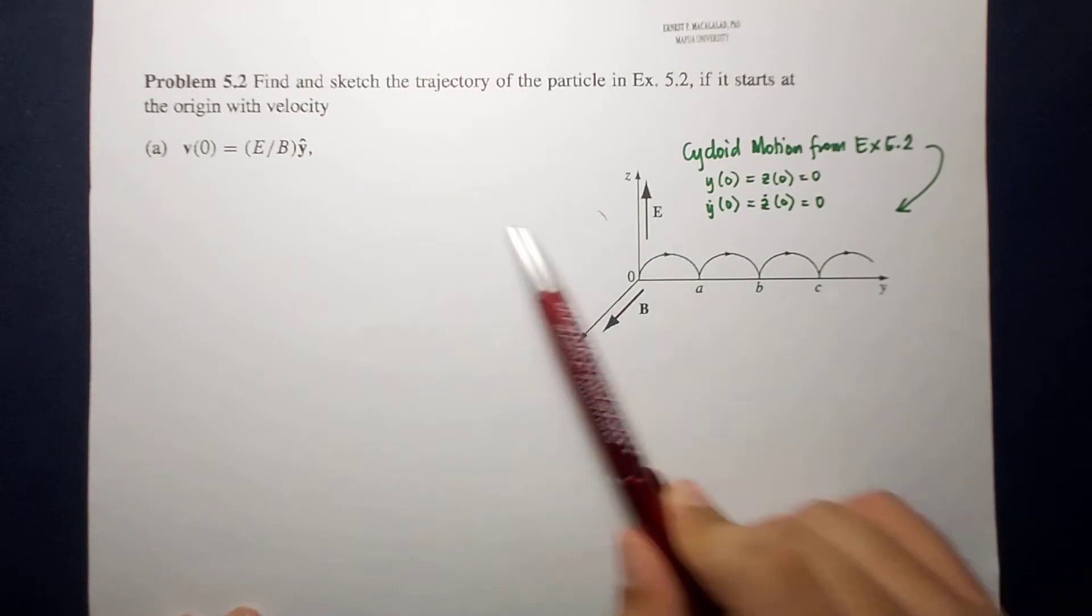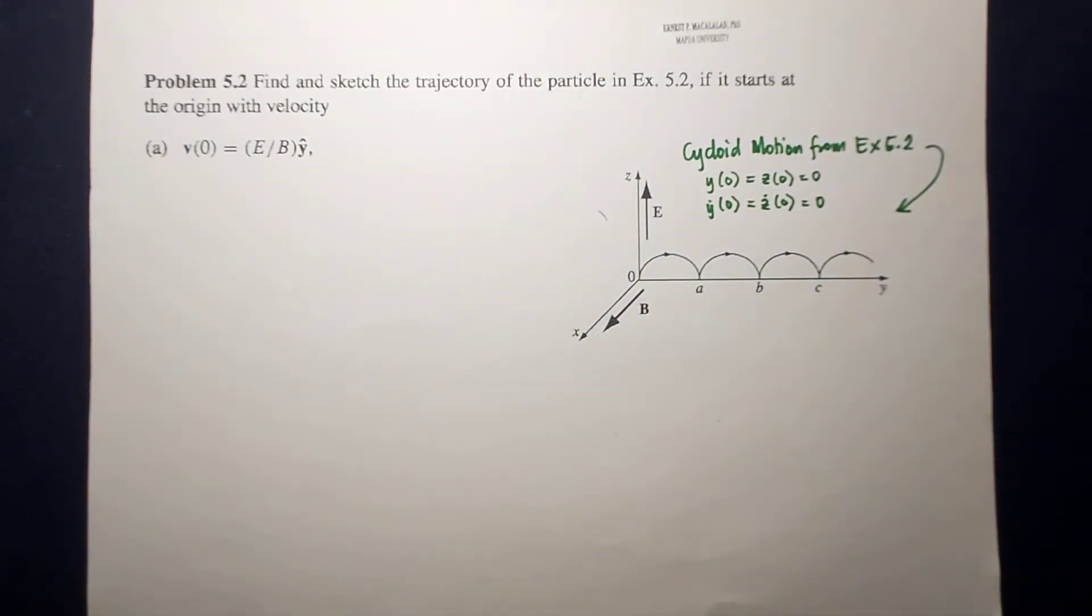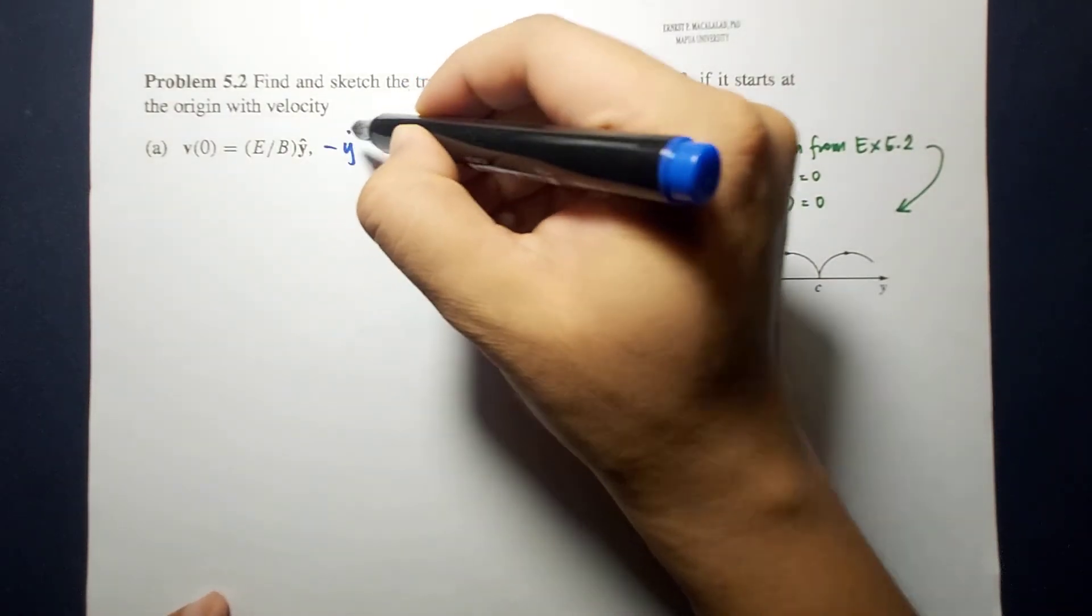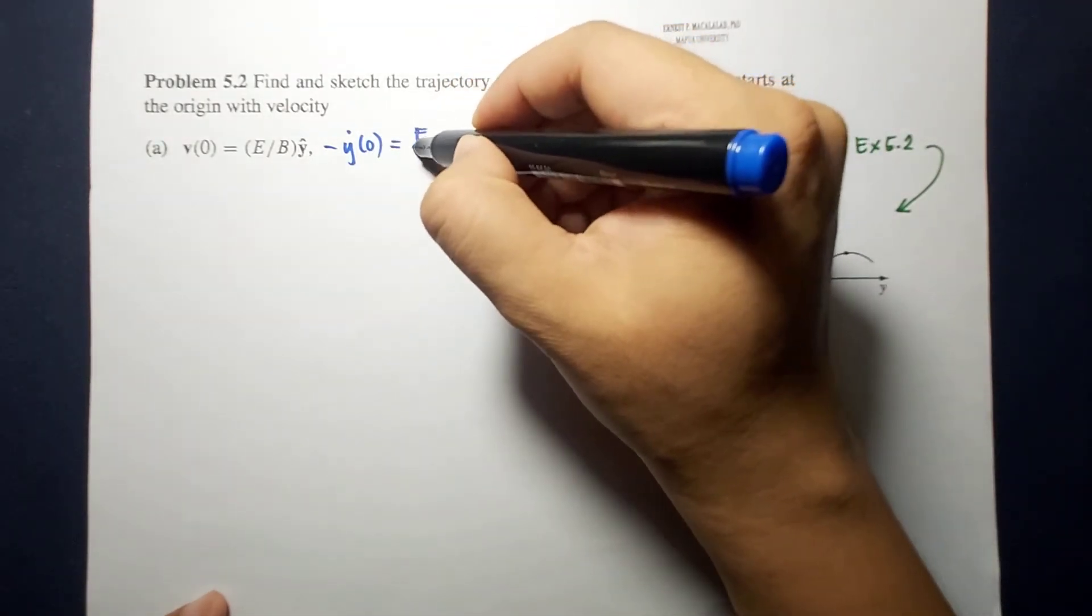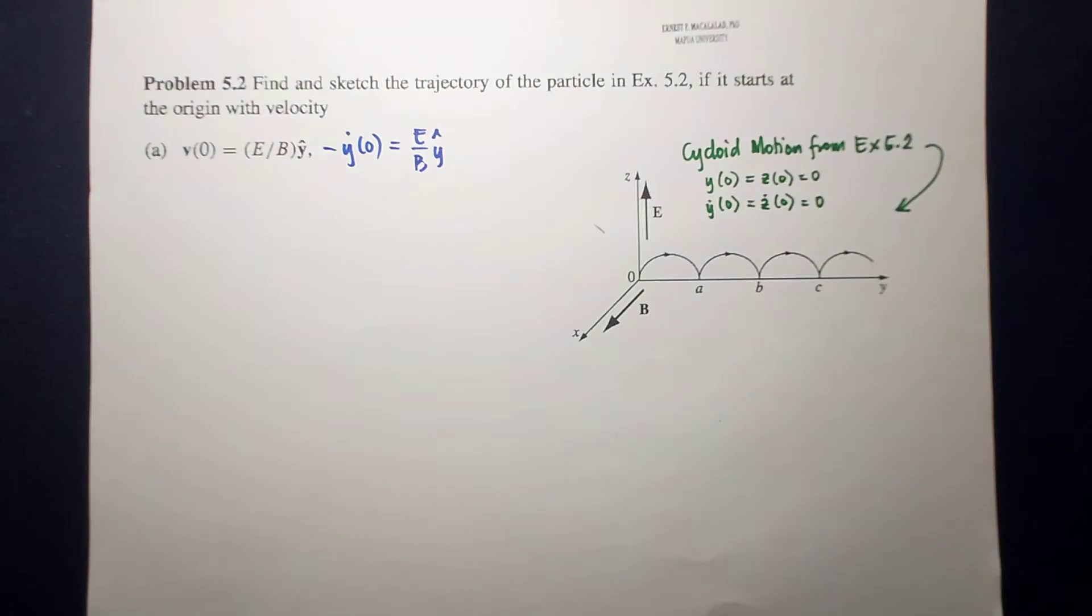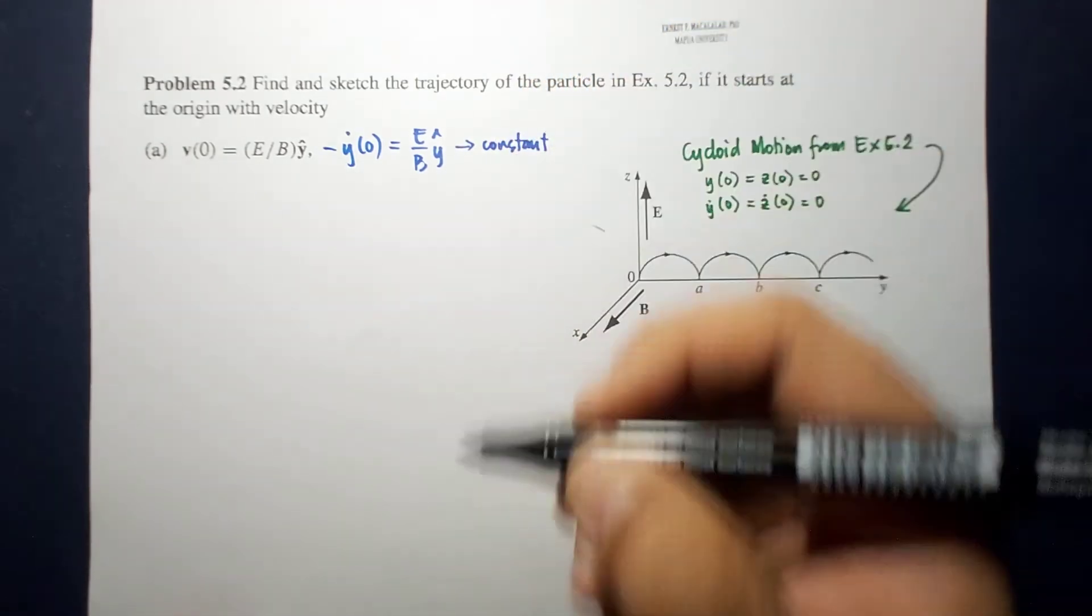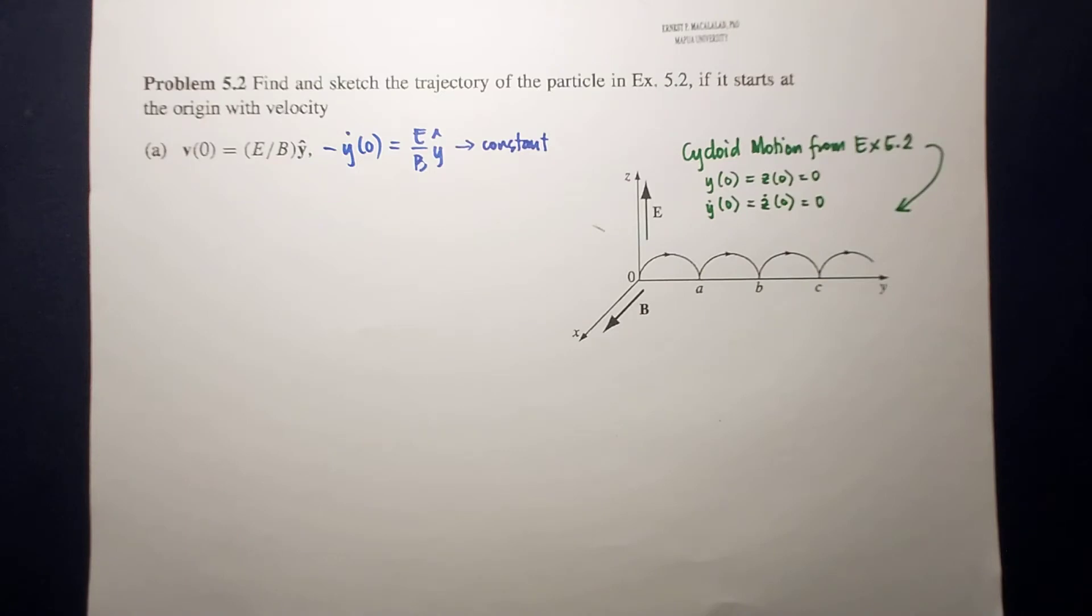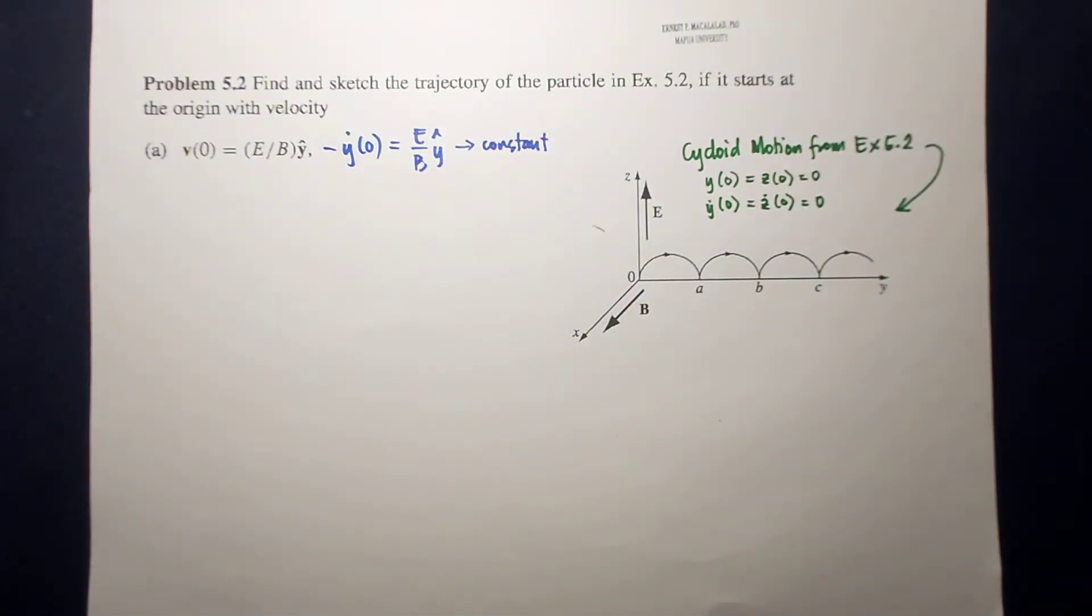In this problem, we introduce an initial velocity that is directed along y. So this is actually y dot at time equal to 0 equals e over b y hat. As you will notice that this is a constant. So initially, the particle moves at a constant velocity at time equal to 0.